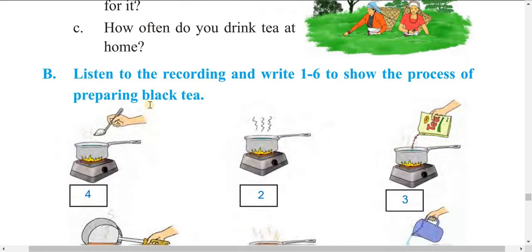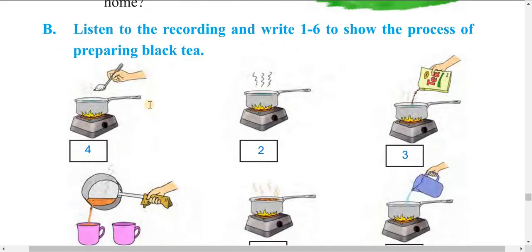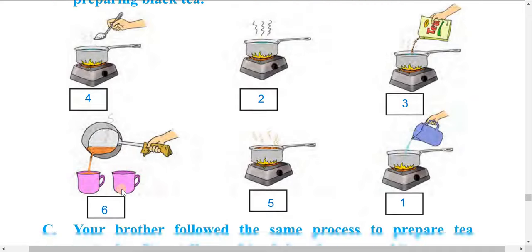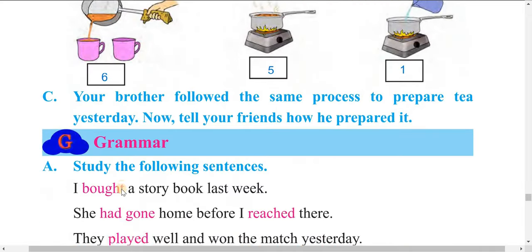Now for the listening exercise: listen to the recording and write steps one to six about the process of preparing black tea. Your teacher will play the audio. The first step, the second step, the third, fourth, fifth, and sixth steps — listen carefully and fill them in.